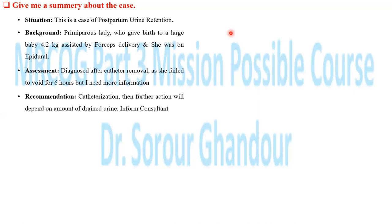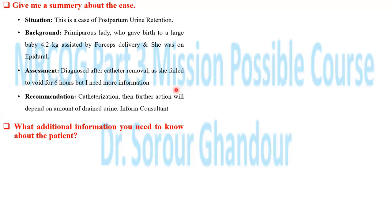You don't need to wait for the examiner to ask what additional information you need — you already mentioned it in the assessment. Be organized: additional information means history, examination, and investigation. What are the additional information you need to know about this patient from the history?